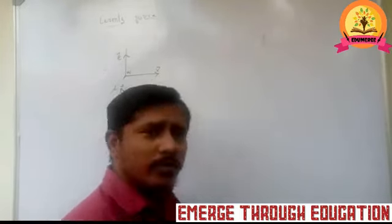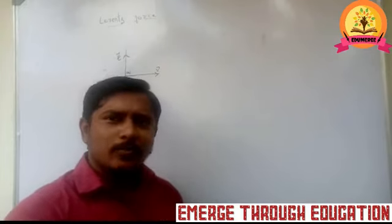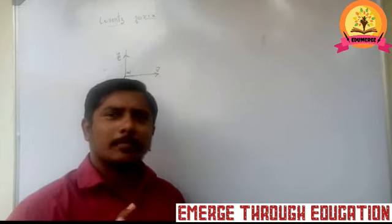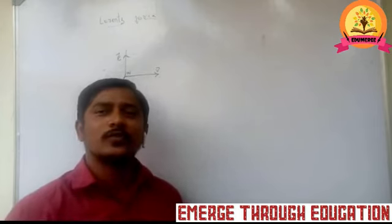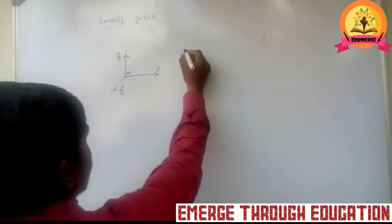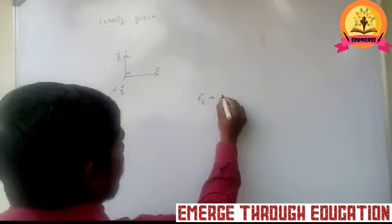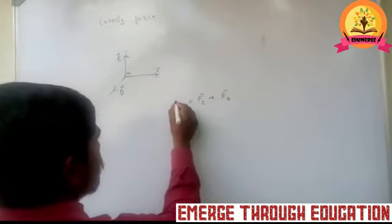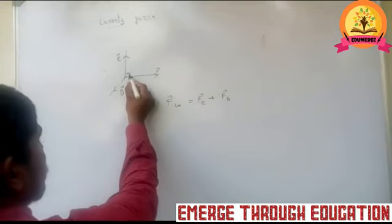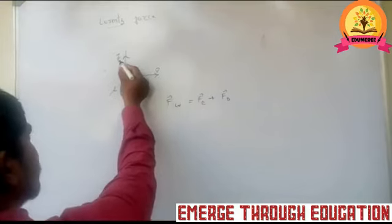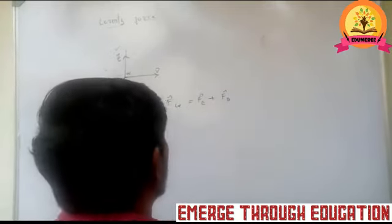When a charge is in a region with both electric field and magnetic field, it experiences both an electric force and a magnetic force. The total force experienced by the charge moving in a region having both electric field E and magnetic field B is called Lorentz force.